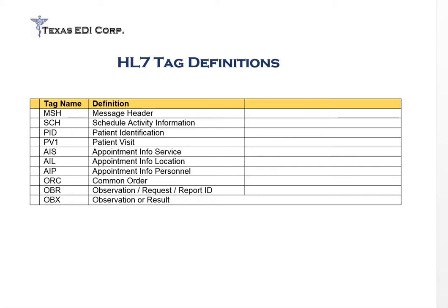This video is going to cover HL7, which is an EDI format primarily used for transmitting lab information back and forth between trading partners. In the healthcare environment, most transactions use HIPAA transactions, which are X12 formats — including claims, remittances, eligibility requests and responses, enrollment, healthcare status, or prior authorizations. In the pharmaceutical market, they might use NCPDP, but when talking about lab work and lab information messaging, they primarily use HL7.